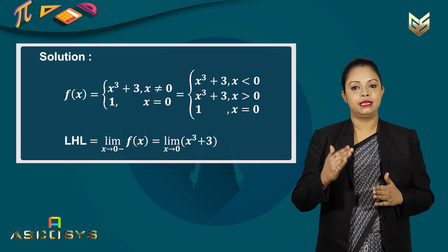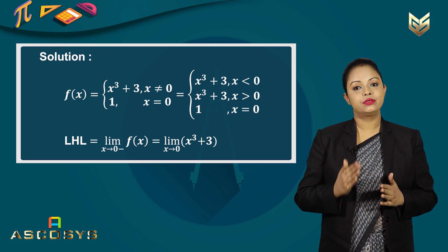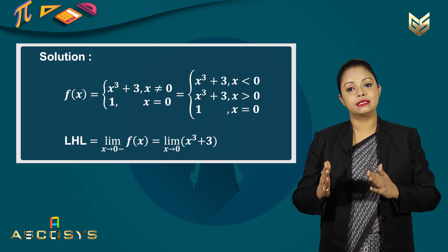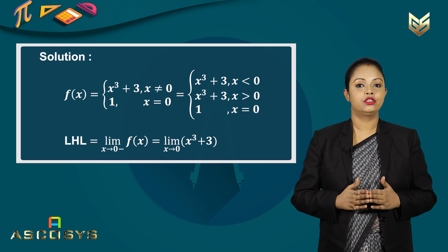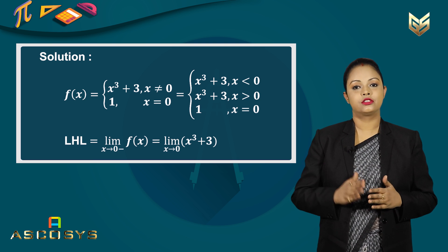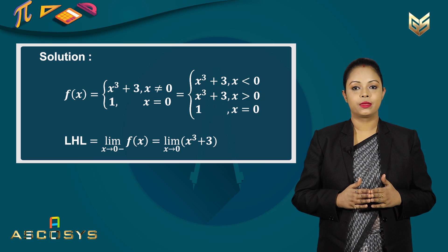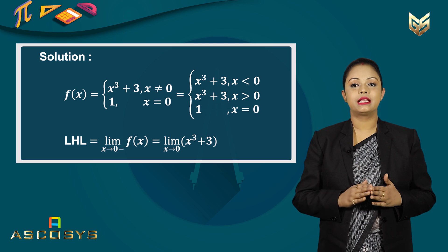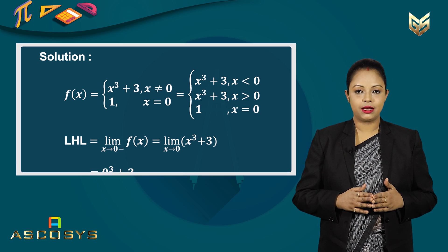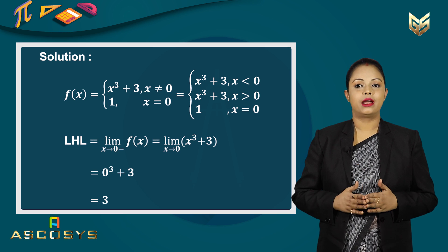Left-hand limit is defined as the limit of f(x) as x goes to 0 minus, because left-hand side values are always less than 0. When x goes to 0 minus, that means when x is less than 0, our function is x³ plus 3 from the definition. So the next step becomes the limit of x³ plus 3 as x goes to 0. The work of the minus sign is over — it was only for choosing our function f(x). Putting x equal to 0, the limit becomes 0³ plus 3, and the answer is 3.